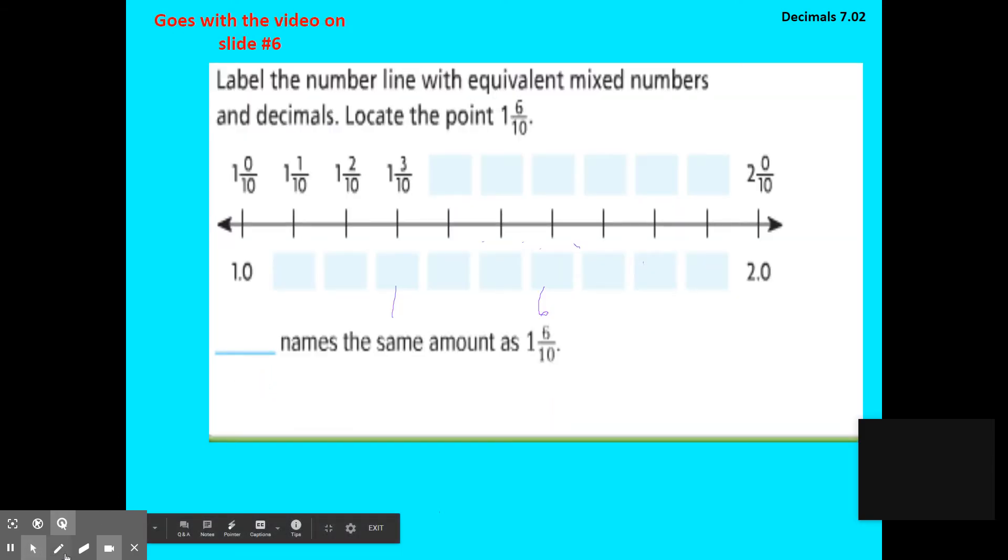On this page, we're going to be asked to fill in the boxes here to represent this decimal or mixed number on a number line. Looking at our patterns here, I can see that this would have to be one and four tenths.